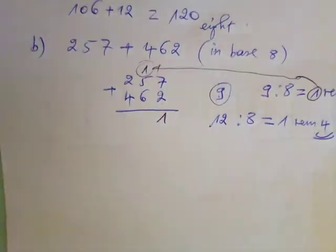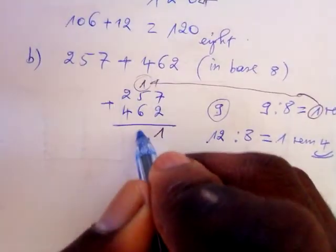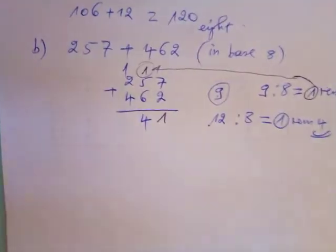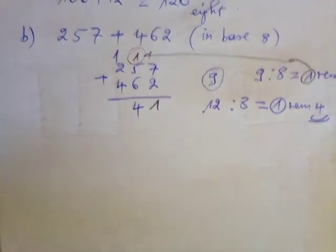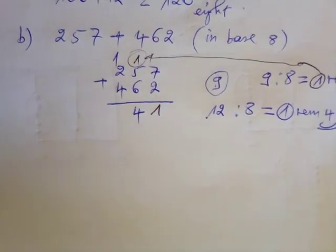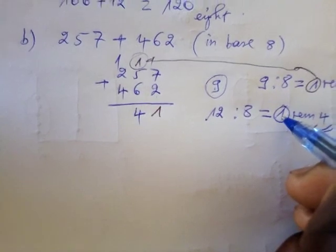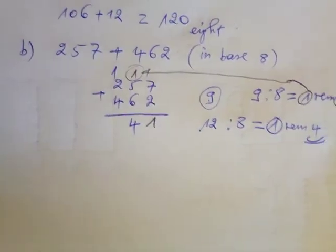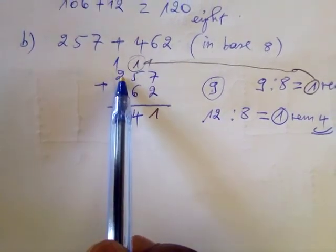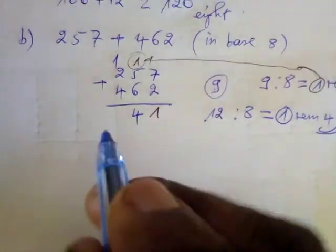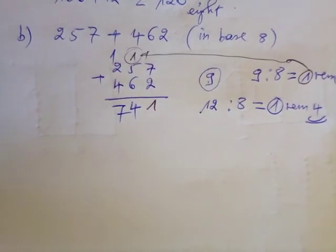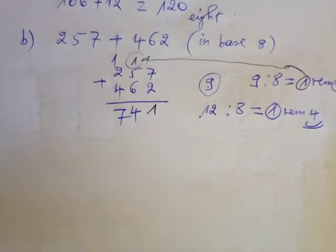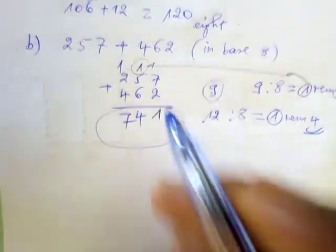The remainder four is written in the eights place. The quotient one is carried and added to the hundreds column. Now we add: one plus two plus four, which equals seven. Seven is within base eight, so we write it directly.